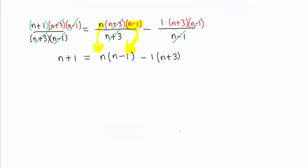Let's expand and clean this up. Negative 1 times n is negative n. Negative 1 times 3 is negative 3.